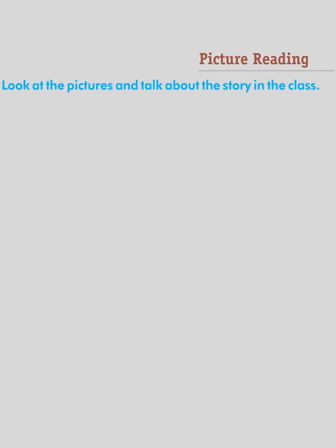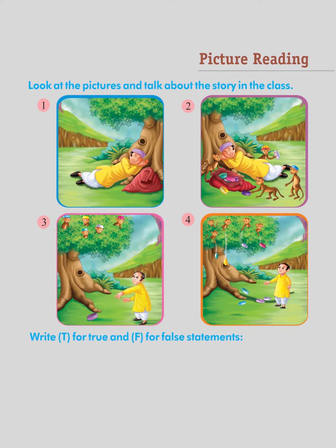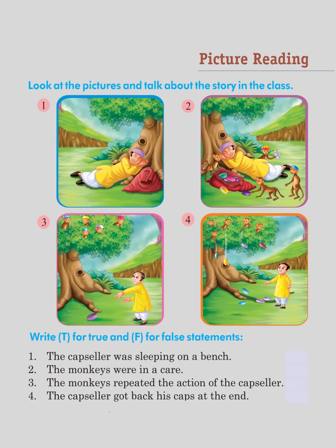Chapter 18: Picture Reading. Look at the pictures and talk about the story in the class. Write T for True and F for False: The cape seller was sleeping on a bench — False. The monkeys were in a cave — False. The monkeys repeated the action of the cape seller — False.